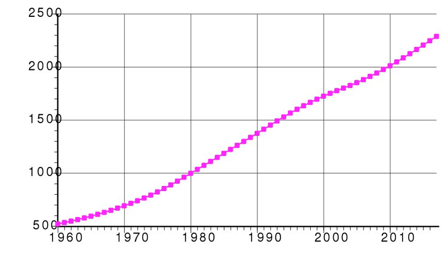Hospital bed density: 1.8 beds per 1,000 population. Obesity adult prevalence rate: 18.9%. Major infectious diseases — degree of risk: high. Food or waterborne diseases: bacterial diarrhea, hepatitis A, and typhoid fever. Vectorborne disease: malaria.